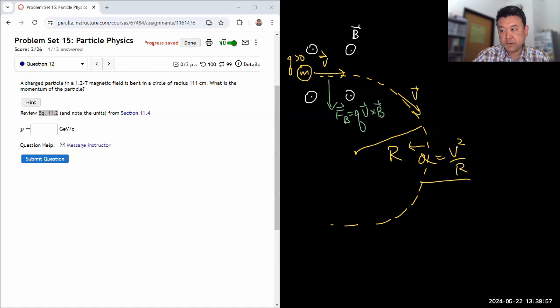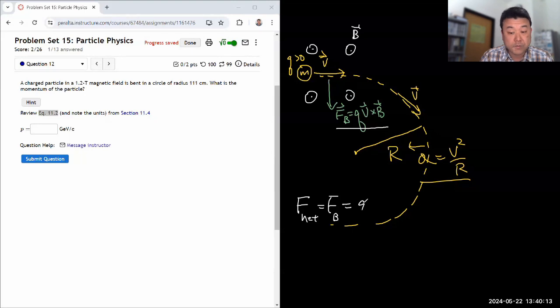So let's now set up the equation. We have an expression for the magnetic force, so we can say the net force on the particle is the magnetic force. Here the v and B are perpendicular, so the magnitude will be just qvB for the cross product, and that must equal the net force that we would infer from the centripetal acceleration, so m times v squared over R.